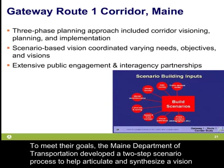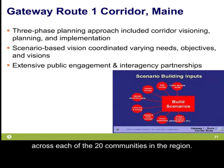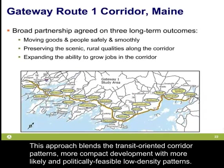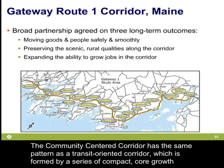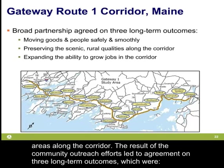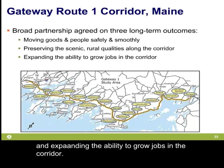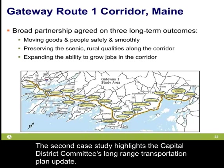To meet their goals, the Maine Department of Transportation developed a two-step scenario process to articulate and synthesize the vision across each of the 20 communities in the region. The Gateway Route 1 Steering Committee chose a hybrid approach called the Community-Centered Corridor, which blends transit-oriented corridor patterns and more compact development with more politically feasible low-density patterns. The result of community outreach led to agreement on three long-term outcomes: moving goods and people safely and smoothly, preserving the scenic rural qualities along the corridor, and expanding the ability to grow jobs in the corridor.